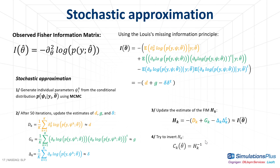Finally, this estimate is inverted to get an estimate of the variance-covariance matrix of the parameters. The matrix may be difficult to invert if it is not well estimated or poorly conditioned, which can happen if there are correlations between parameter estimates. If the inversion succeeds, the procedure stops here. If the inversion fails, another iteration is done, and so on, until the matrix can be properly estimated.